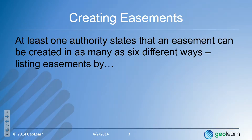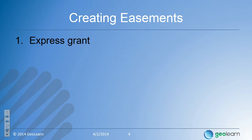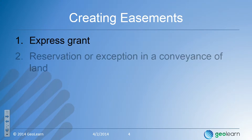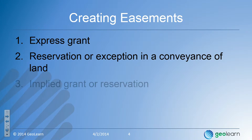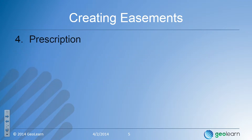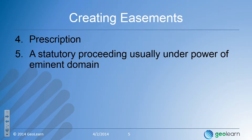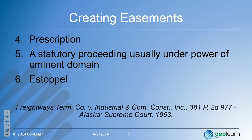At least one authority states that an easement can be created in as many as six different ways: by express grant, by reservation or exception in a conveyance of land, by implied grant or reservation, by prescription, by a statutory proceeding such as condemnation through eminent domain, or by estoppel. This is from a case out of Alaska.